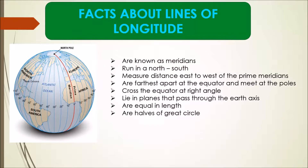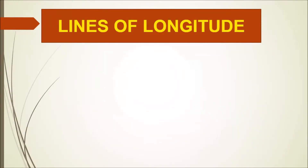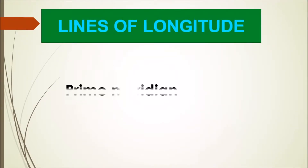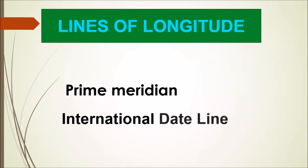Lines of longitude are equal in length and are half of a great circle. There are two main types of lines of longitude: the prime meridian and the international date line.